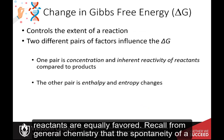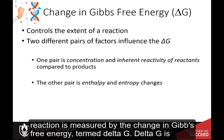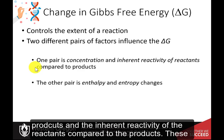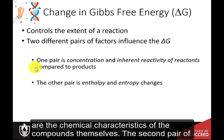Recall from general chemistry that the spontaneity of a reaction is measured by the change in Gibbs free energy, termed delta G. Delta G is influenced by two different pairs of factors. The first pair is the concentration of reactants and products and the inherent reactivity of the reactants compared to the products — these are the chemical characteristics of the compounds themselves.